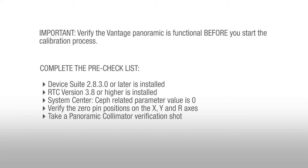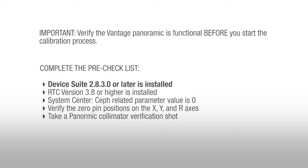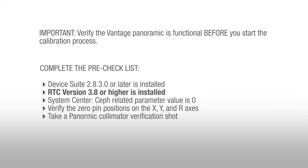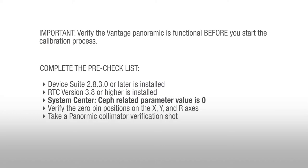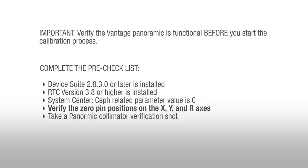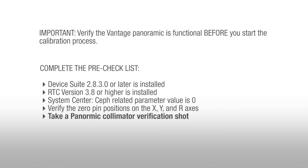It is important that you verify that the Vantage panoramic is functional before you start the calibration process. By completing this pre-checklist, be sure to perform each of the following items: check that Device Suite 2.8.3.0 or later is installed, RTC version 3.8 or higher is installed, ensure the CEPH-related parameter value is 0, verify the 0-pin positions on the X, Y, and R axes, and then check the panoramic collimator verification shot.